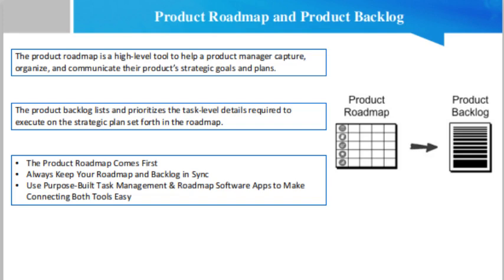The product backlog lists and prioritizes the task-level details required to execute on the strategic plan set forth in the roadmap. A quick glance at your backlog should convey what's next on your development team's to-do list as they execute on your roadmap's big picture vision. Typical items on a product backlog include product stories, bug fixes, and other tasks.